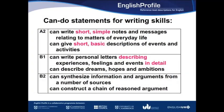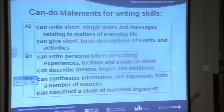These are three statements to do with writing skills. When a student is learning to write in English, at A2 they can write short simple notes and messages and give short basic descriptions of events. Moving up to B1, they can write personal letters describing experiences and describe things in detail. And then at B2, they can synthesize information and arguments from a number of sources and construct a chain of reasoned argument.